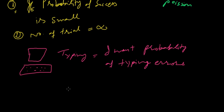So you have typed 5000 letters and you get just five mistakes, so the probability of success is very small and number of trials is very large. At that time we cannot use binomial distribution, we will use Poisson distribution.